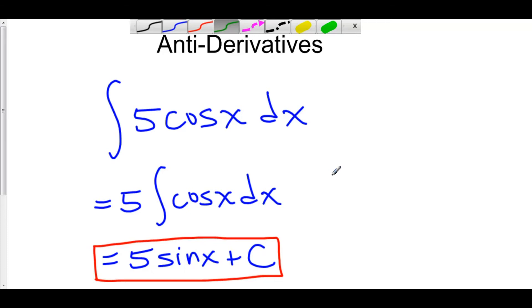Because literally this is 5 times the antiderivative of cosine x, which is sine x plus c. And so it does stand to reason that 5 would get distributed to the c. But you have to ask yourself, what is c?